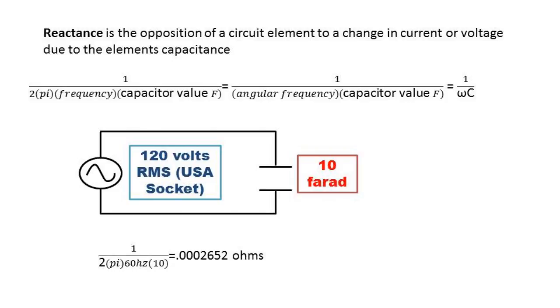You can find the reactance by using the formula 1 over 2 pi times the frequency times the capacitance value in farads. So for an example, I did a 120 volt RMS USA wall socket connected to a 10 farad capacitor. Once we plug our numbers into the calculator, we get 265 micro ohms.